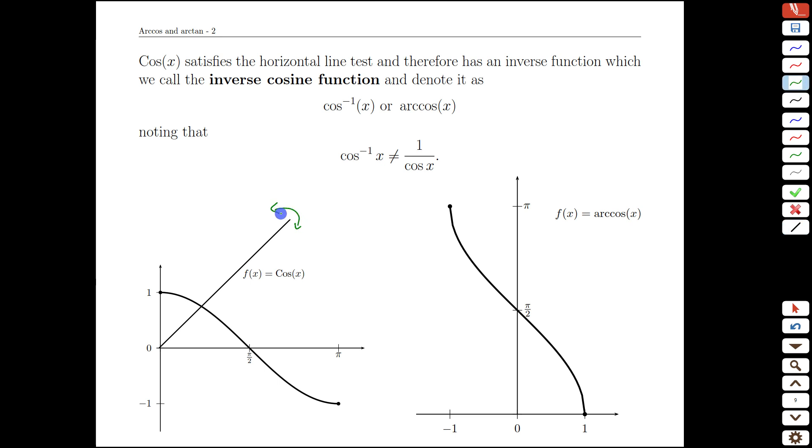It's a little less obvious what the graph looks like here, but you can see that this point at 0, 1 gets reflected to the point 1, 0. The point pi over 2, 0 gets reflected up to 0 pi over 2. And similarly for the final point here at pi negative 1, it goes to negative 1 pi. And from there you can fill in the graph of the inverse or the arc cosine graph.